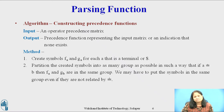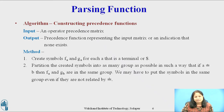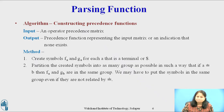We may have to put symbols in the same group even if they are not directly related by the same-precedence-as relation. For example, if a has the same precedence as b and c has the same precedence as b, then f(a) and f(c) must be in the same group, since they are both in the same group as g(b).